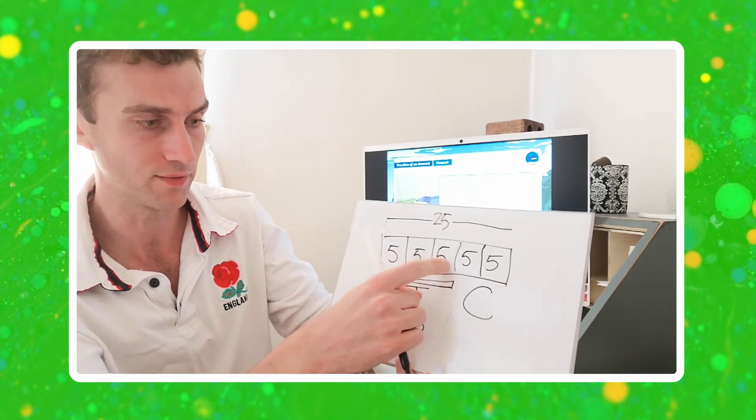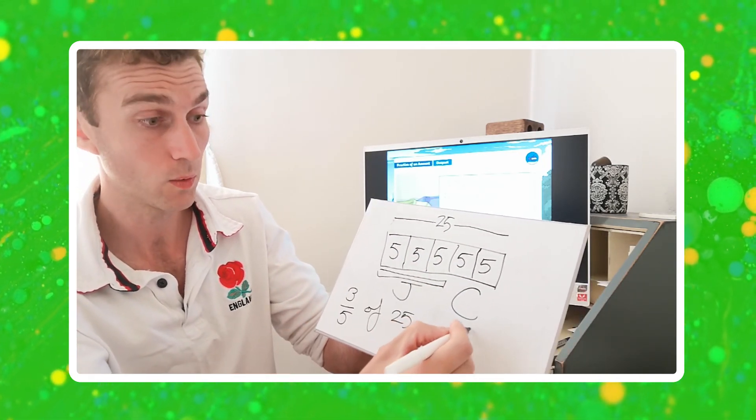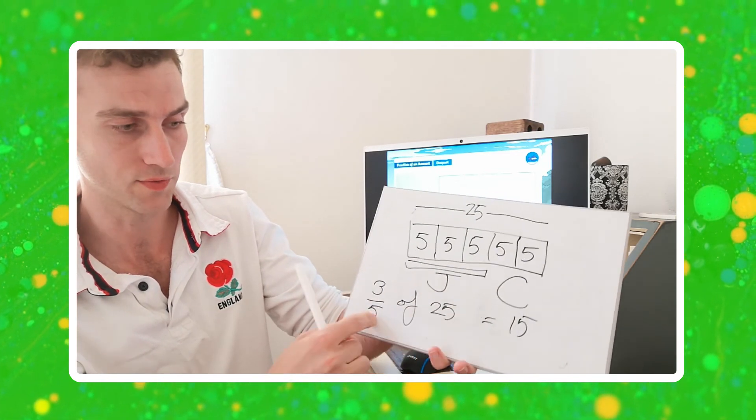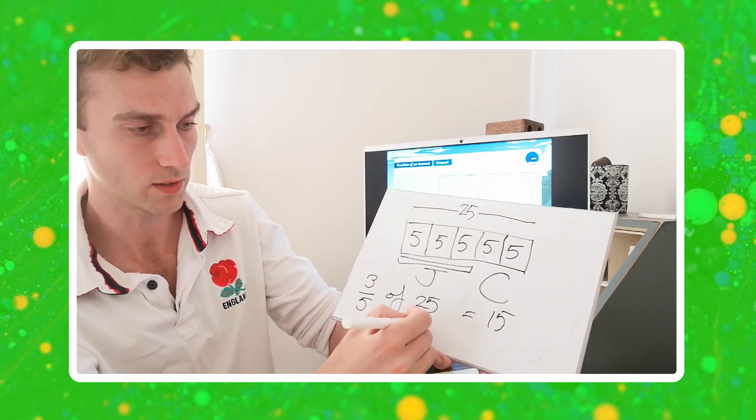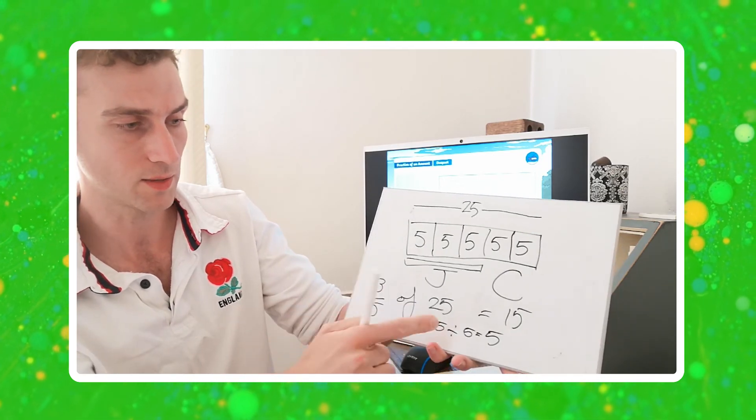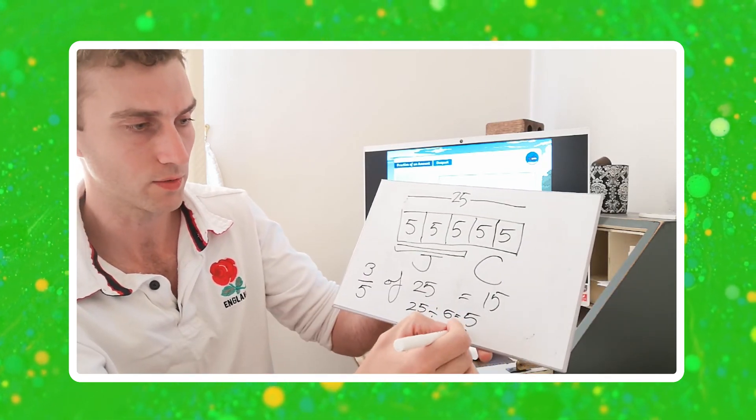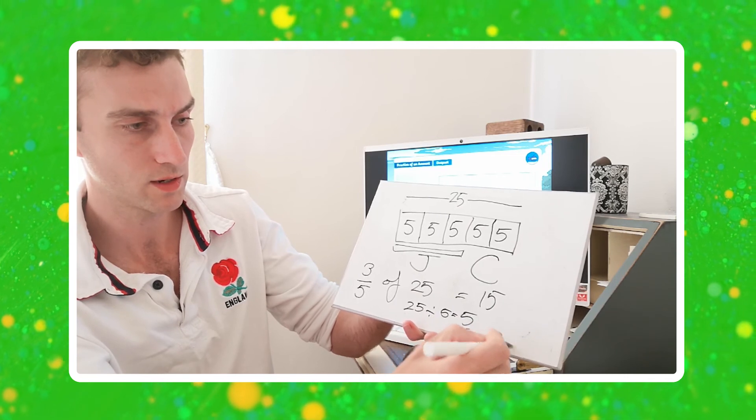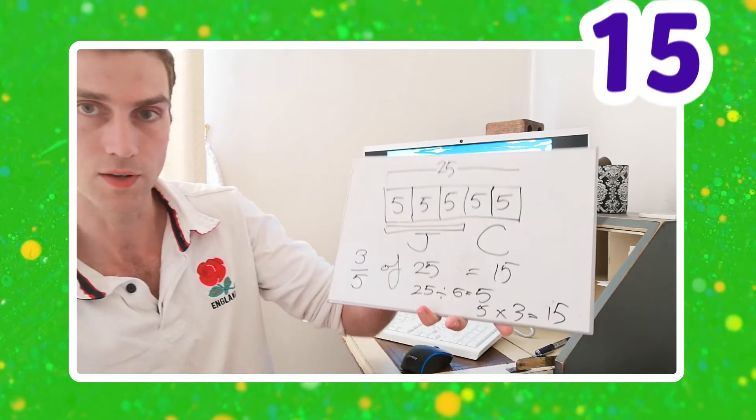3 fifths of 25. Now, you could have done 25 divided by 5. 25 divided by 5, which is 5. And then times that by the numerator. So the 5 times 3 to get the same answer. 15.